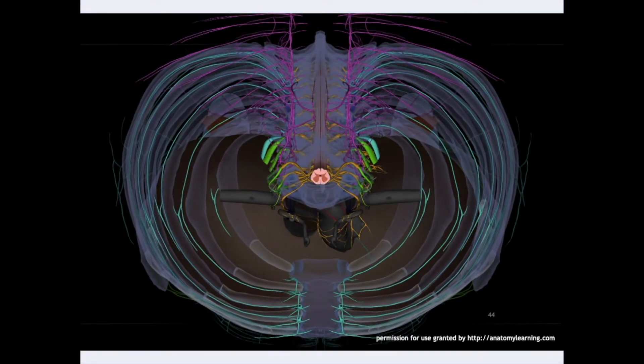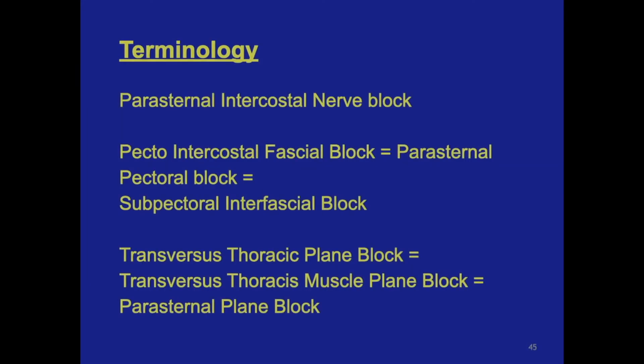A very important subject is the terminology of different techniques for sternal pain control. As terminology of parasternal blocks can be confusing and mixed up with the TTP block, we need to go into more detail. Many terms are described in literature for regional anesthesia techniques for sternal pain control. These blocks differ in extension of analgesia, but they all target the anterior branches of the intercostal nerves. The various terms all concern anesthetic blocks around the parasternal region.